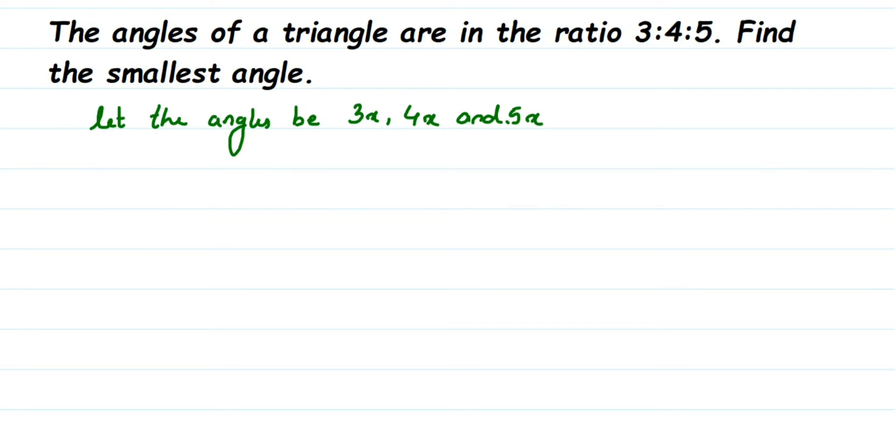Now, since we're talking about the angle, we have to use one of the properties of the triangle, that is angle sum property. Sum of all angles in a triangle is equal to 180 degrees. When you add up all the angles, the sum is 180 degrees. Let me write down that. We're going to use this property to find out the angles. Sum of all angles in a triangle is equal to 180 degrees.